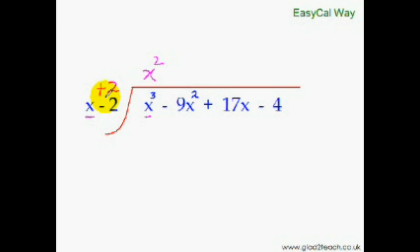Now to get the next term of your answer, all you have to do is multiply this plus 2 with this x square and add it to the next term of the dividend. So 2 times x square is 2x square and 2x square minus 9x square will be minus 7x square. So we will put minus 7x and this will be the second term of the answer.